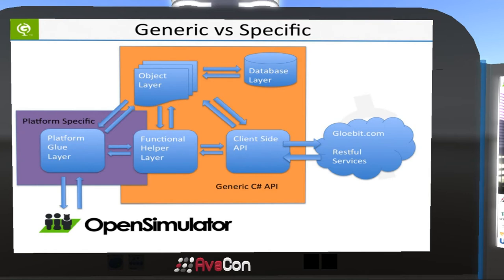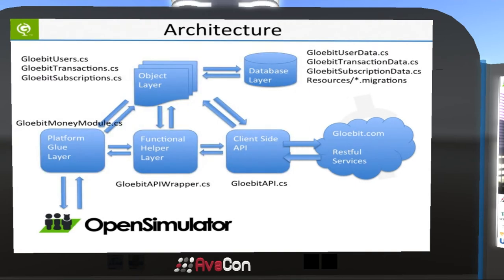The Glowbit money module as it stands in the repository is really two things together — we may separate these at some point. One is a generic C# API that could be used by other platforms or for a web marketplace integration. Most of that wouldn't change. The platform glue layer on the left, and a little bit of the functional helper layer, would change — along with maybe some of the database layer. But that purple piece on the left is really what is deeply tied to how OpenSim uses our C# API to hit the Glowbit services.